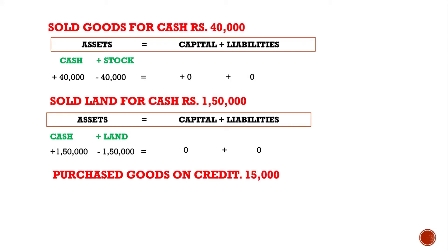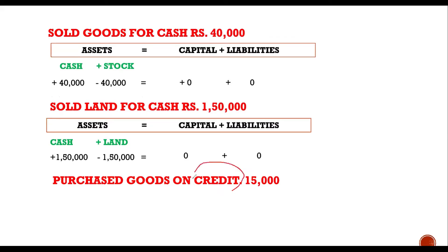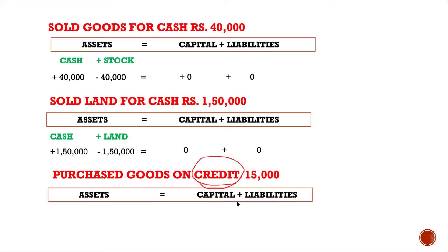Purchase goods on credit rupees 15,000. When goods are purchased on credit, the supplier becomes a creditor — a third party, an outsider who does not belong to your business. So a liability is being created. Stock will increase by 15,000 and creditors will also increase by 15,000. Here a liability is being created as goods are being purchased on credit.